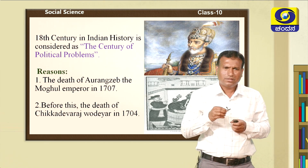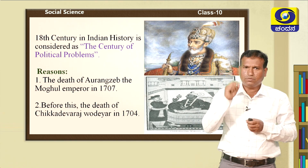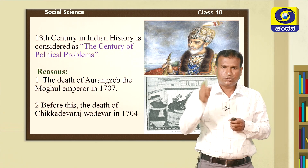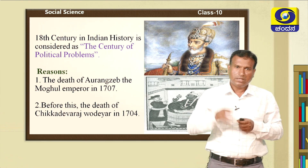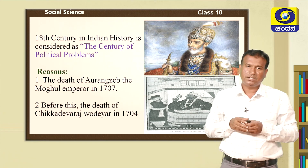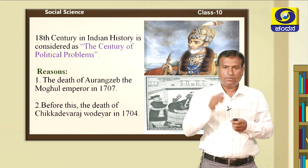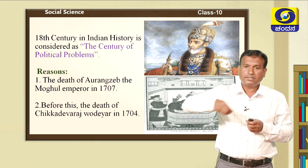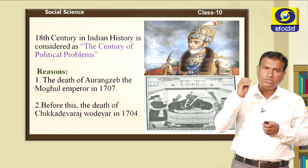Why do we call the 18th century the century of political problems? In 1707, the Mughal emperor Aurangzeb died. Soon after his death, there were no eminent rulers in the Mughal Empire, and the Mughals lost control over South India. Before Aurangzeb's death, in the Mysore kingdom, Chikkadevaraja Wadiya died in 1704, and after his death, there was a succession struggle in Mysore as well. That is why we call the 18th century in India the century of political problems.